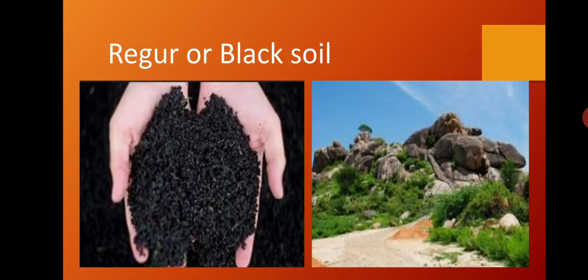Next, we have Regar or black soil. It is found in the areas of medium rainfall in the valleys and alluvial plains of river basins. Two types are found: dark black soil in the western part of the Deccan plateau, and medium black soil in the eastern part, i.e., Vidarbha. Though it is black in color, the proportion of organic components is less in this soil.